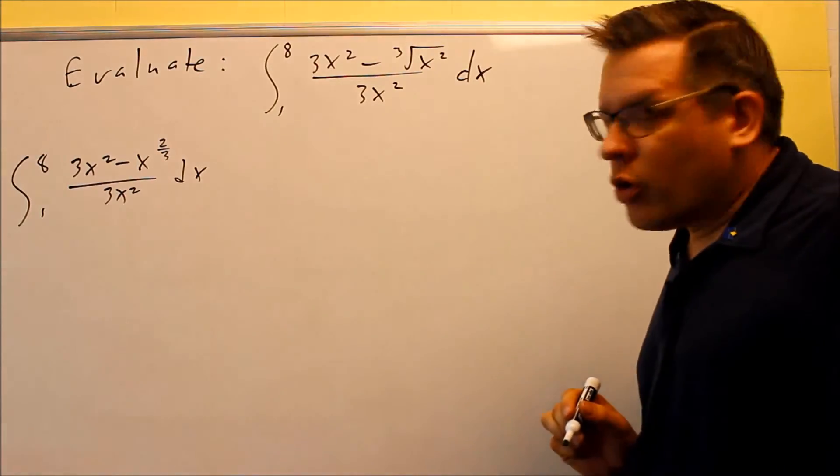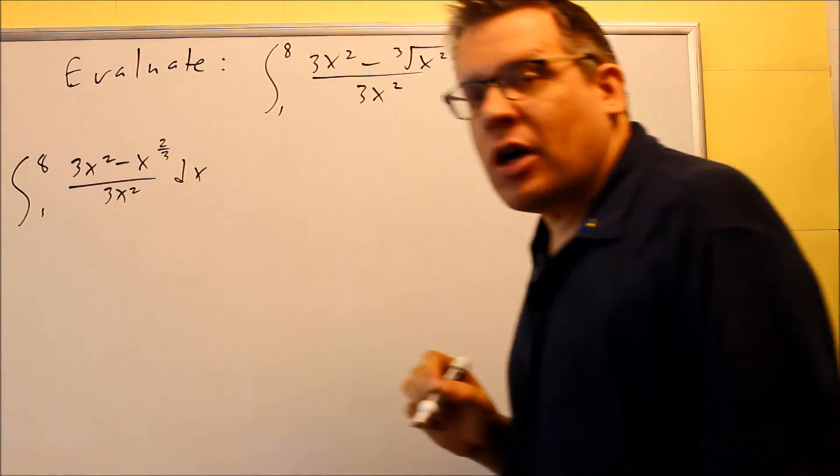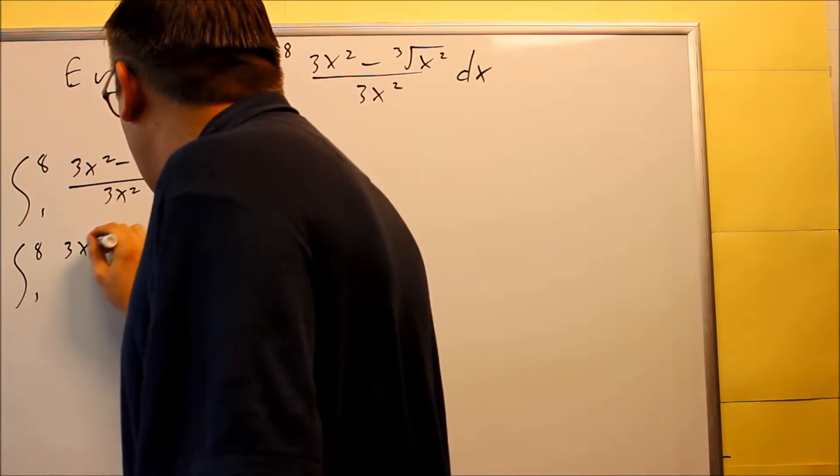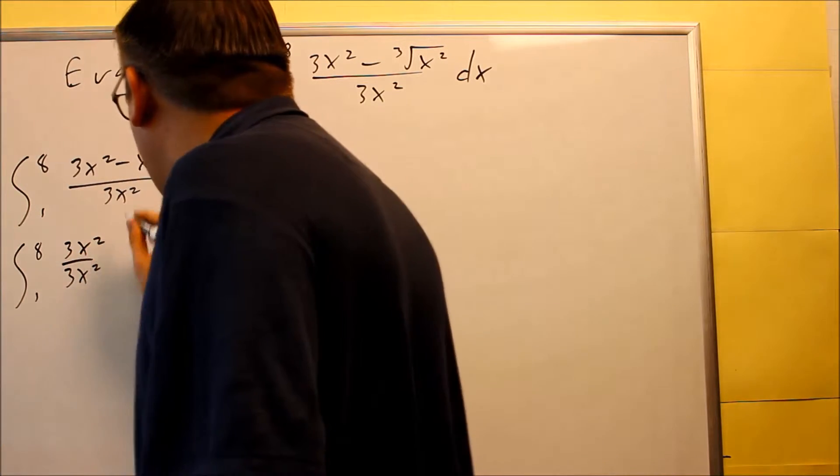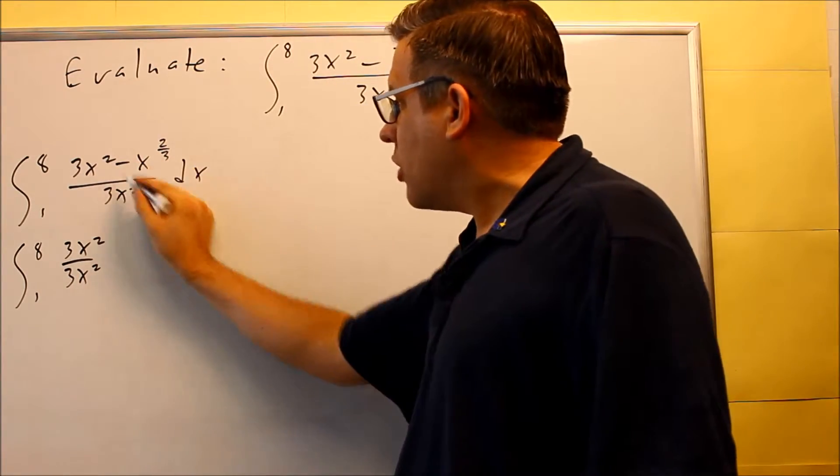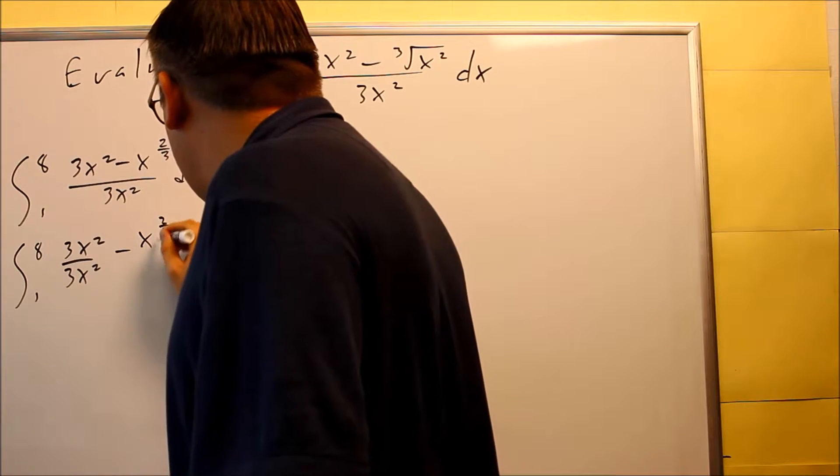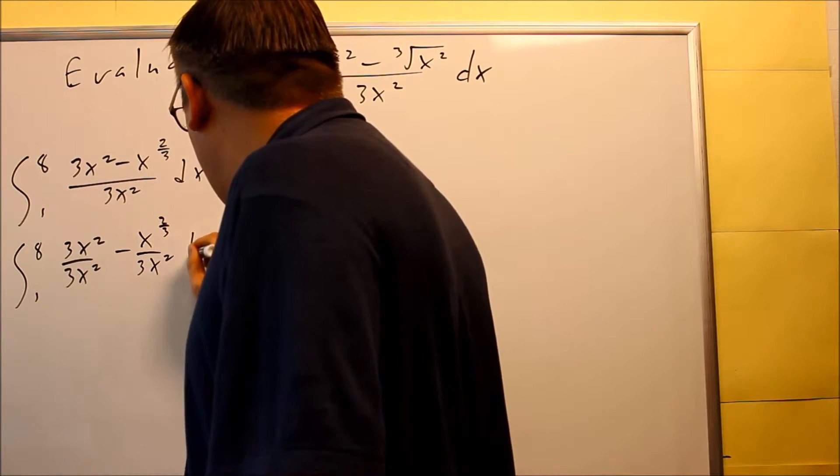Okay, then next, we're going to take everything on top and divide it by 3x squared because you want to simplify this down as much as possible. So we're going to do 3x squared over 3x squared. Don't forget that you're dividing both of them by 3x squared. You're not just reducing that one only. x to the two-thirds over 3x squared dx.